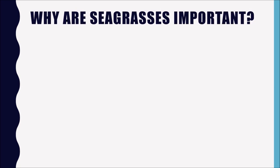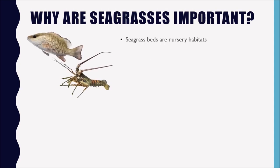So why are seagrasses so important? Well, there are a few different reasons. First, let's talk about how they are nursery habitats. The juveniles of many animals — including baby snapper fish and baby spiny lobster — spend a portion of their young lives in the seagrass beds. These are animals that will often be much larger someday and will move out to deeper water when they're bigger, but when they're in the seagrass beds, they're typically juveniles.